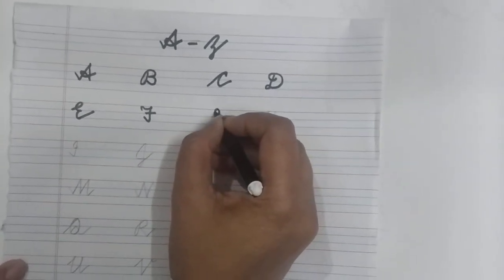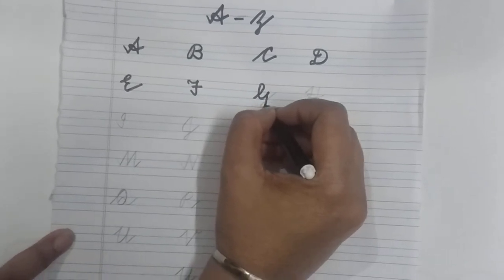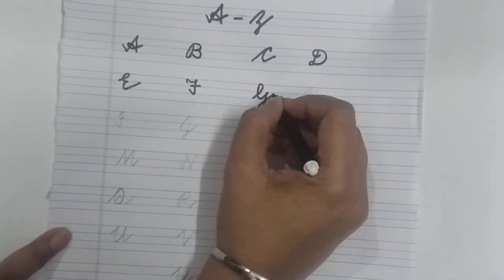Slanting line, loop, come down, slant, again come down, touch the red line, loop and slant. G.